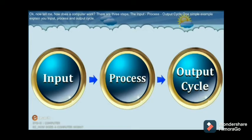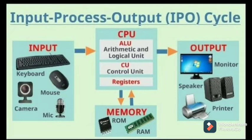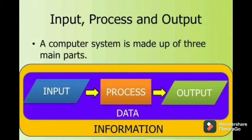A computer works on the pattern of the IPO cycle. Whenever we work on a computer, we first give the input through an input device — the instructions given to the computer are called input. When the work is done by the computer, we call it processing, and the CPU does the processing for us. Finally, whatever output we get is shown on output devices like the monitor. For each input, output, and processing, we have a different set of hardware devices.